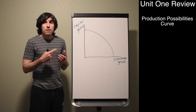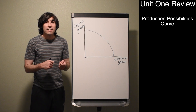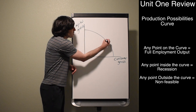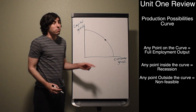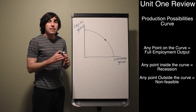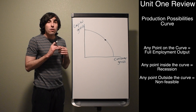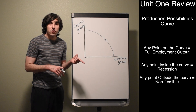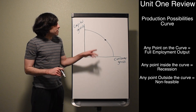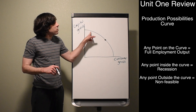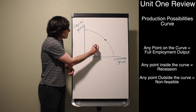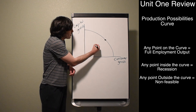Any point on the curve is going to represent a possible production point — this is full employment output. This is an economy that is experiencing only the natural unemployment rate: frictional and structural, with nothing wrong going on. It doesn't matter where on the curve it is; as long as it's touching that curve, they've got full employment output.